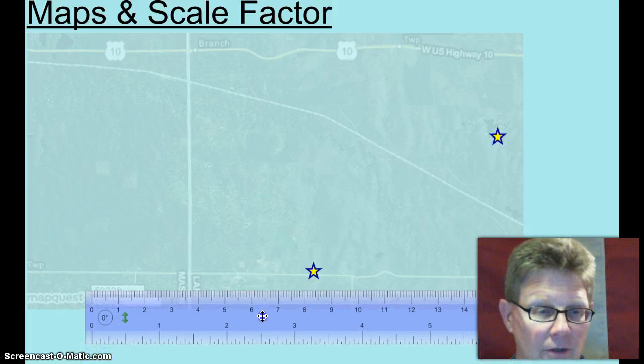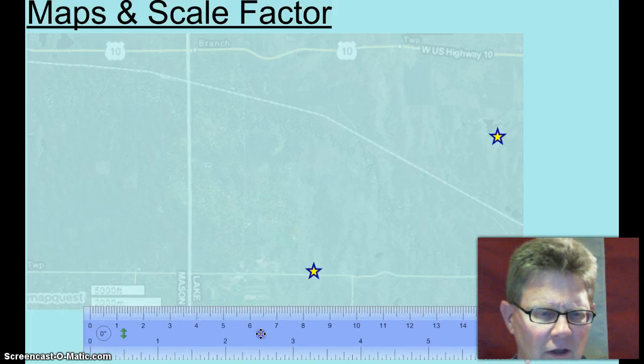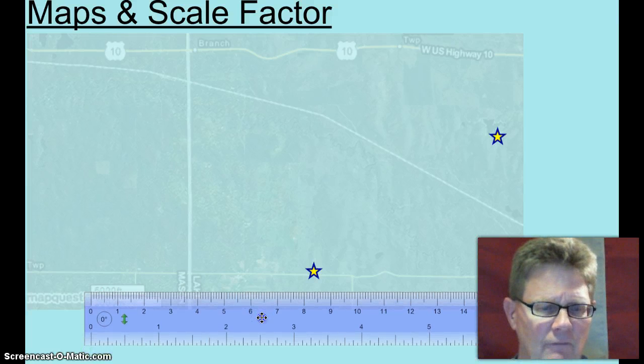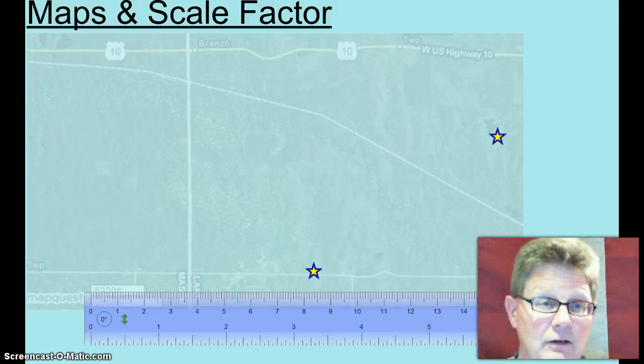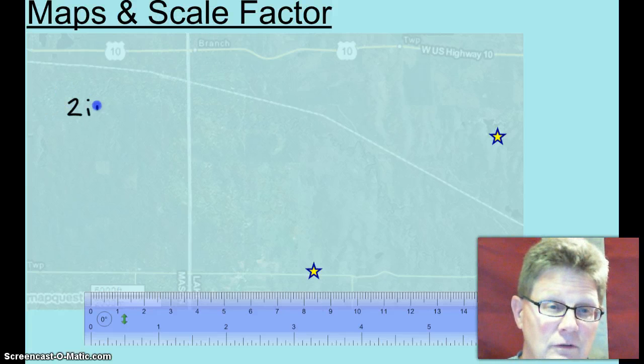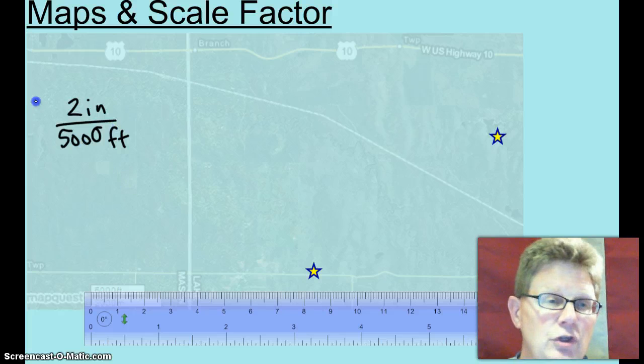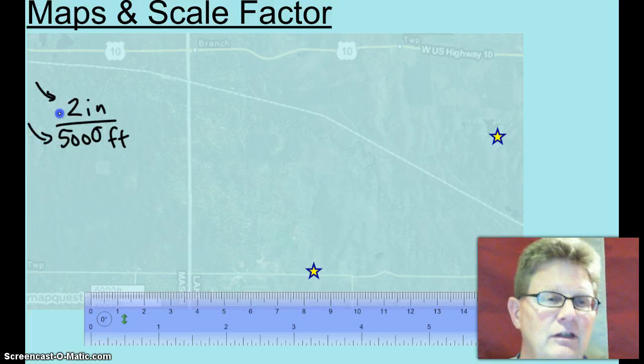So if you look at my ruler, two inches is five thousand feet. Two inches, five thousand feet. So we're going to write, that's the scale factor. Two inches over five thousand feet. And when you write a ratio like this, you always want to do the scale model over reality. Reality almost always goes in the denominator.